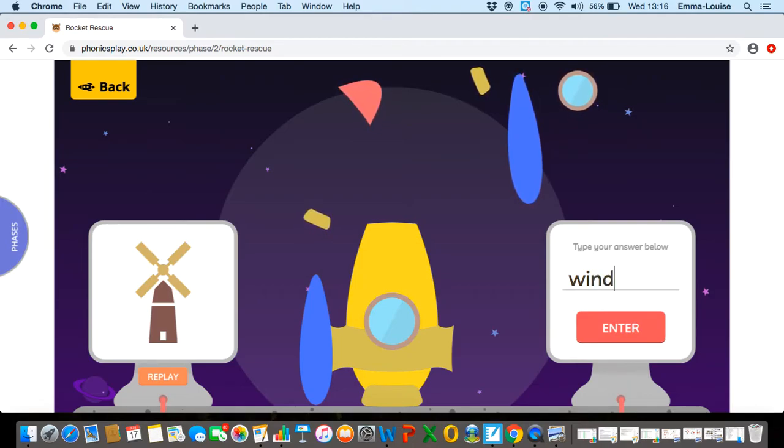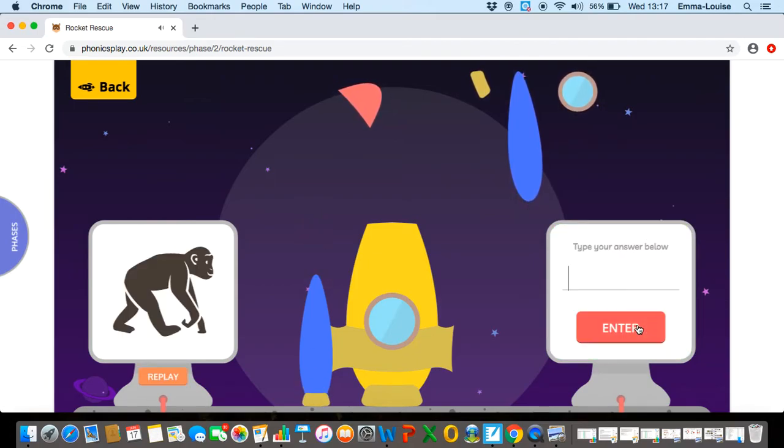Now we need the second part of the word mill. M-i-l. Clap it back together. Windmill. Fantastic. Chimp. Off we go. Ch-i-m-p. Chimp.